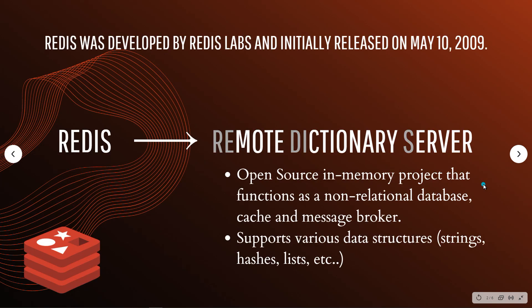Redis was developed by Redis Labs and released in 2009. Redis stands for Remote Dictionary Server. It's an open source, in-memory project that functions as a non-relational database — it doesn't work like other RDBMS or Relational Database Management Systems.